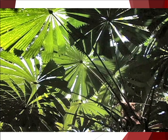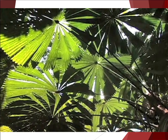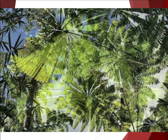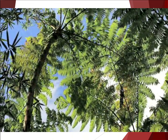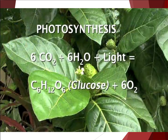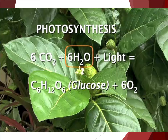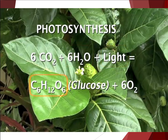Photosynthesis is an essential, life-sustaining process which takes place in plants, algae, and certain protists. It uses captured light energy to convert carbon dioxide and water into stored chemical energy in the form of sugars, while releasing oxygen into the atmosphere. Looking at its most basic chemical equation, 6 molecules of carbon dioxide react with 6 molecules of water in the presence of light to produce 1 molecule of the sugar glucose, C6H12O6, plus 6 molecules of diatomic oxygen.